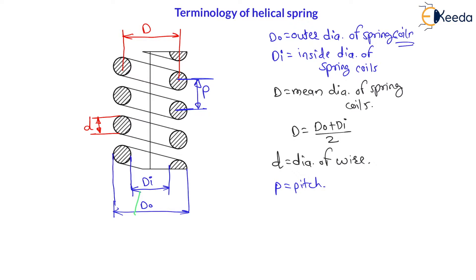Now, if the force acting on this spring is zero, then it is called the free length of the spring. Whenever the force acting on the spring is zero, then whatever may be the length of the spring is called free length. Therefore, this total length of spring we can call as free length — because there is no force acting on the spring.